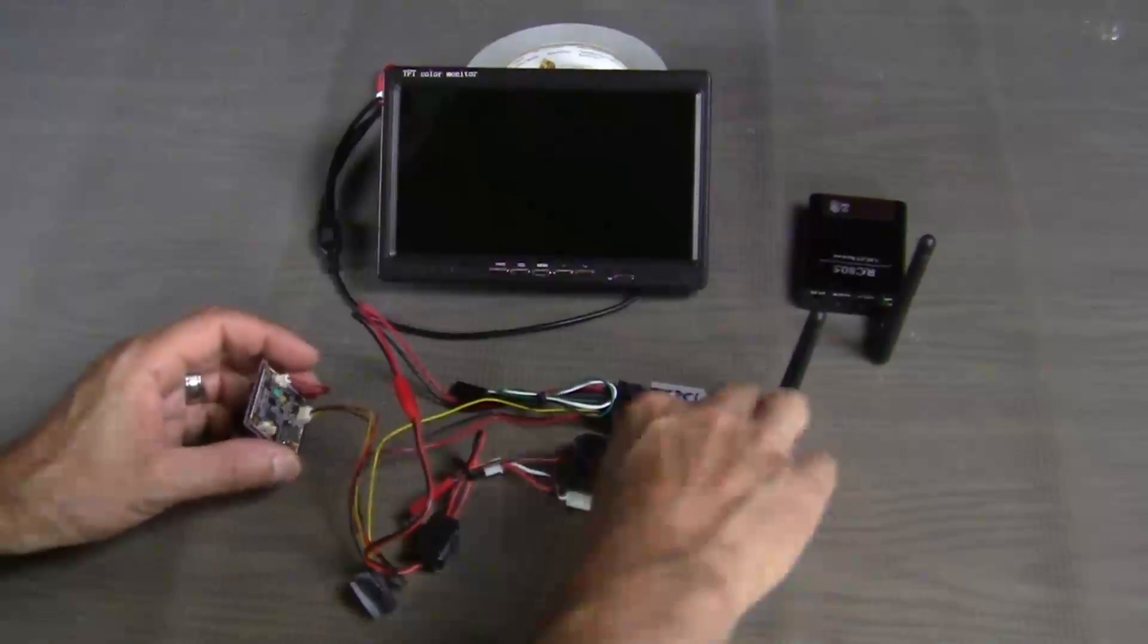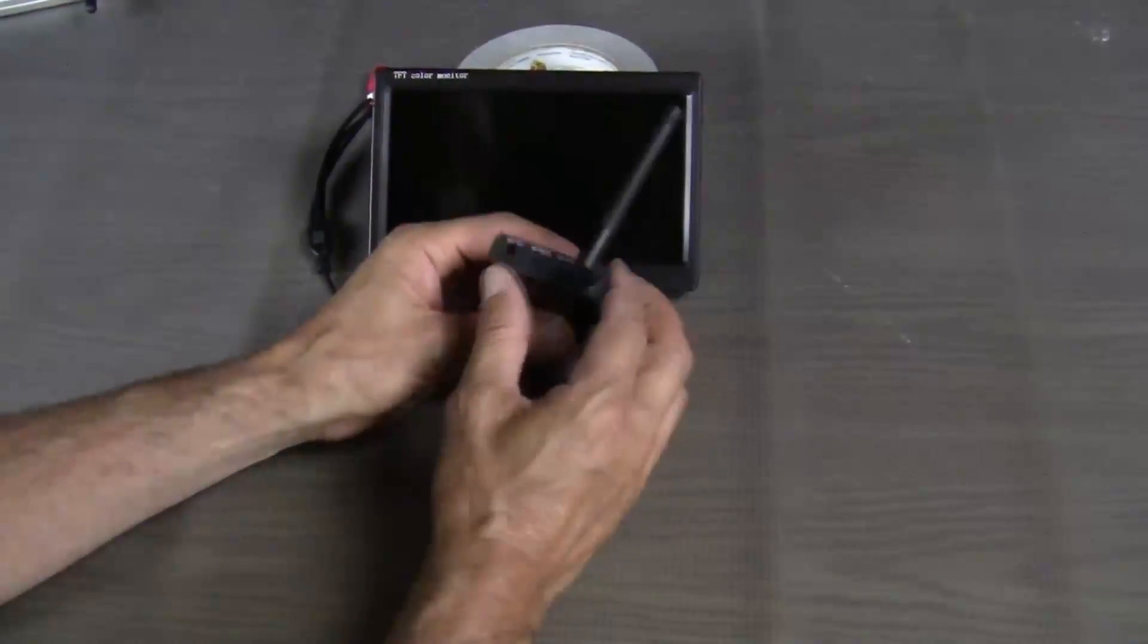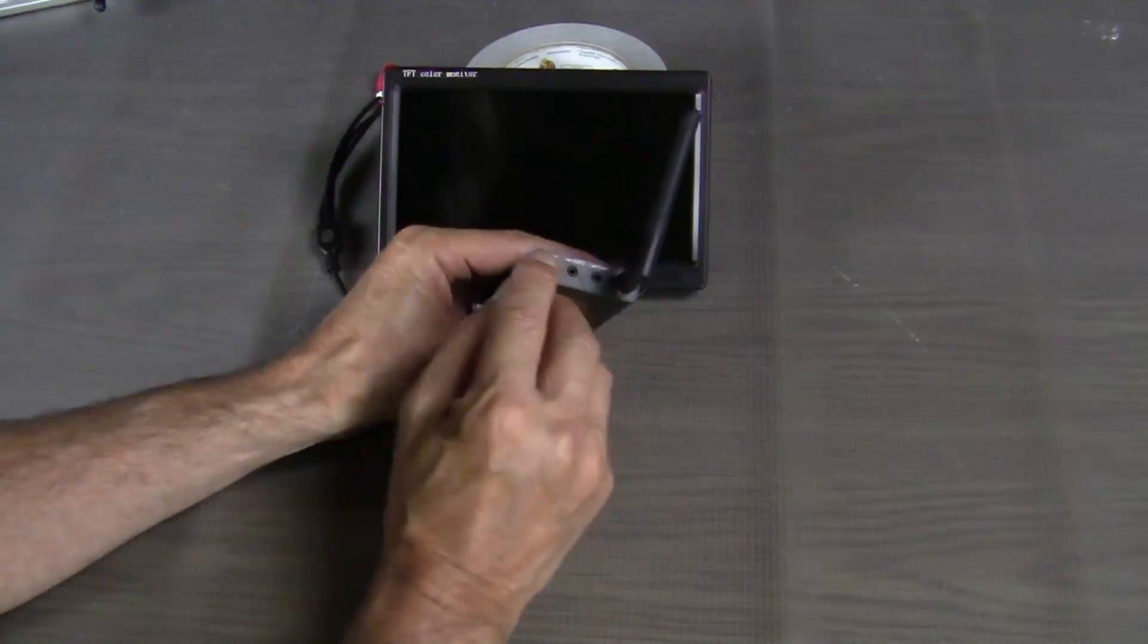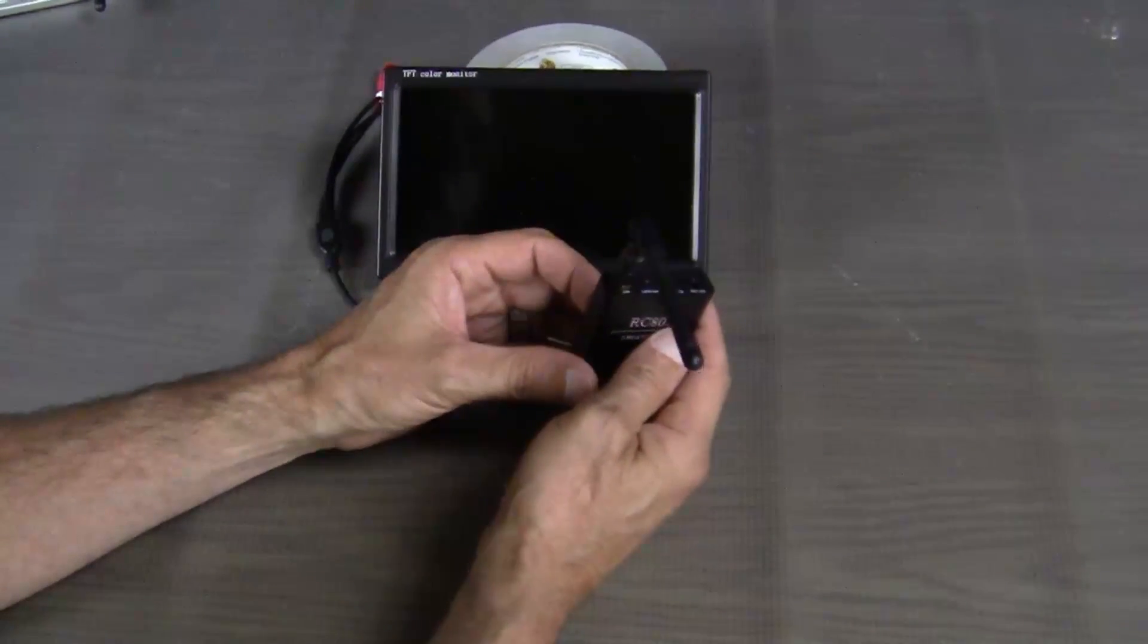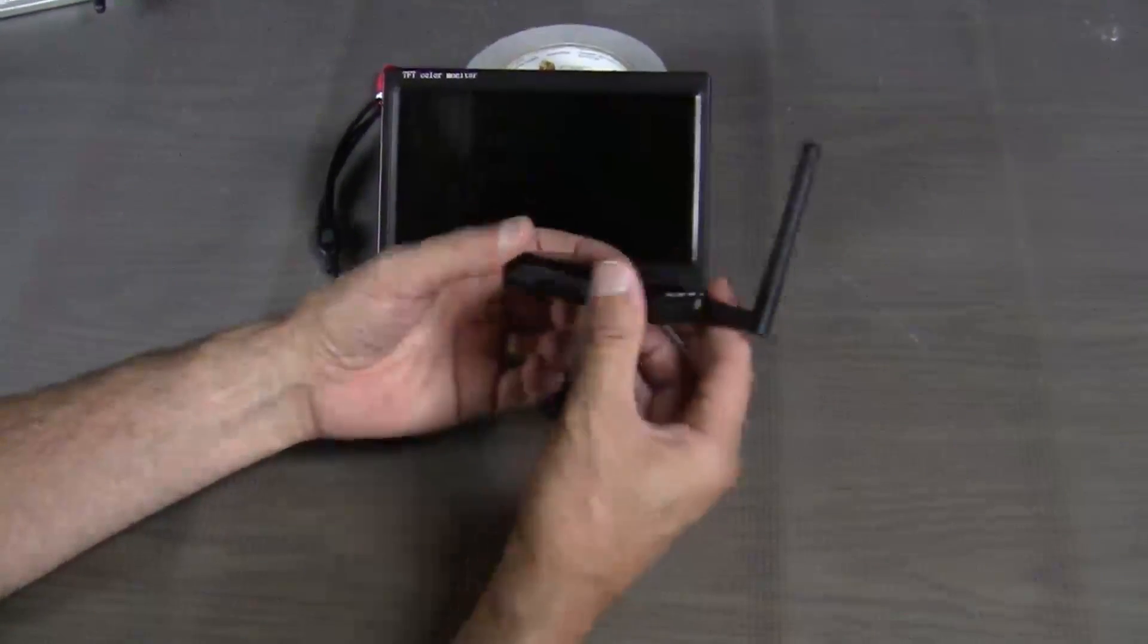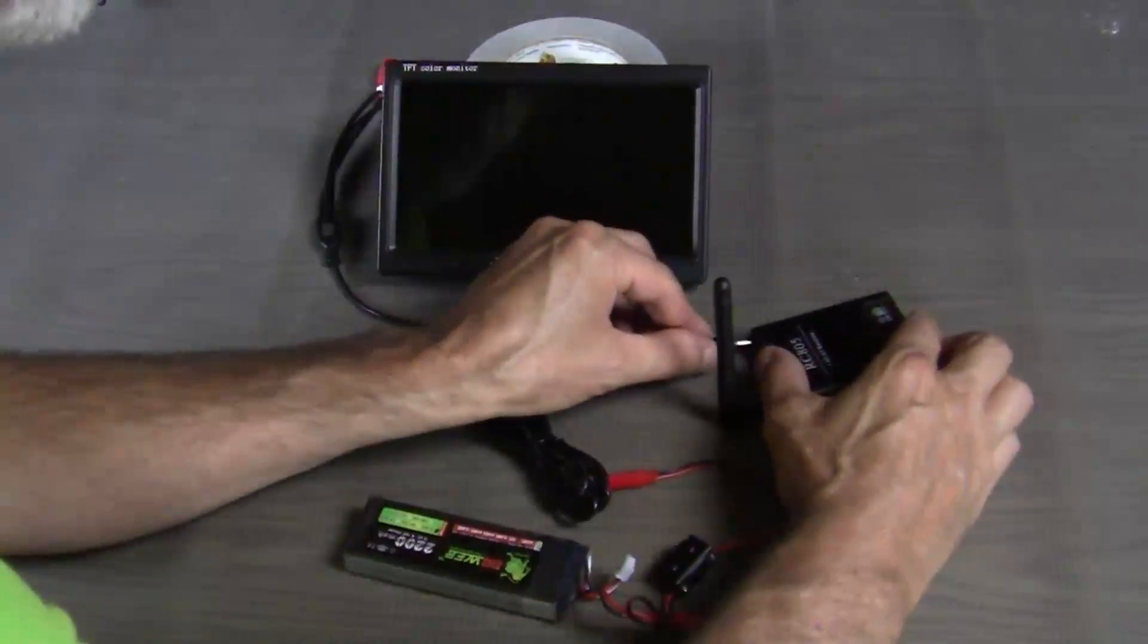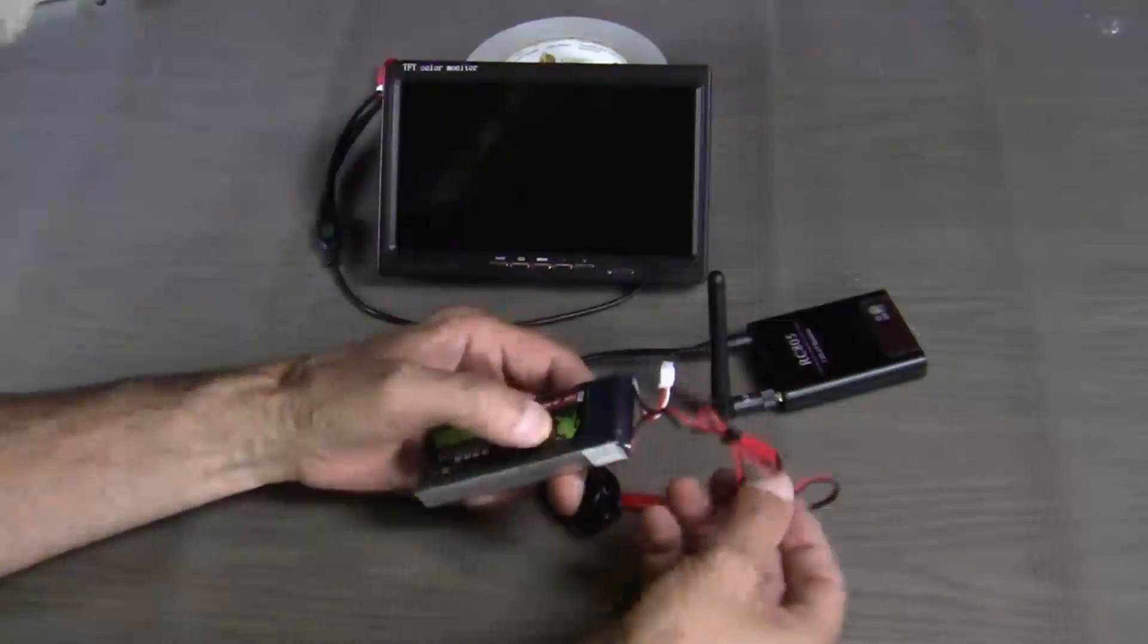OK, so let's set this aside out of our way for just a moment and have a look at our receiver. Our receiver has the antenna connection and then two AV outputs and our power supply. Now, this will run on both of these. Actually, the transmitter and the receiver will both run on seven to twelve volts. So, let's just connect some power to this. And I'm just using a little 7.4 volt lipo battery.